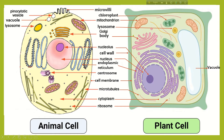Look at the figure. Here two types of endoplasmic reticulum are present: one is smooth and another is rough. We can also see centrosome, cell membrane, microtubules, cytoplasm, and ribosome.